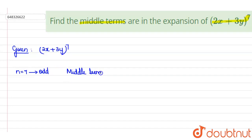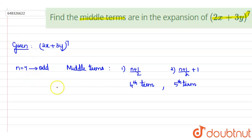So the middle terms will be, the first middle term will be (n+1)/2 and the second one will be (n+1)/2 + 1. So here the first middle term will be (7+1)/2, that is the fourth term. And the next middle term will be the fifth term. So we have to find out t4 and t5.